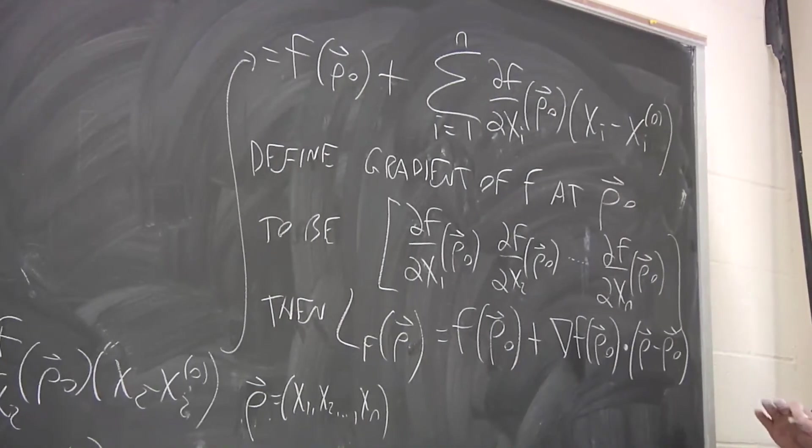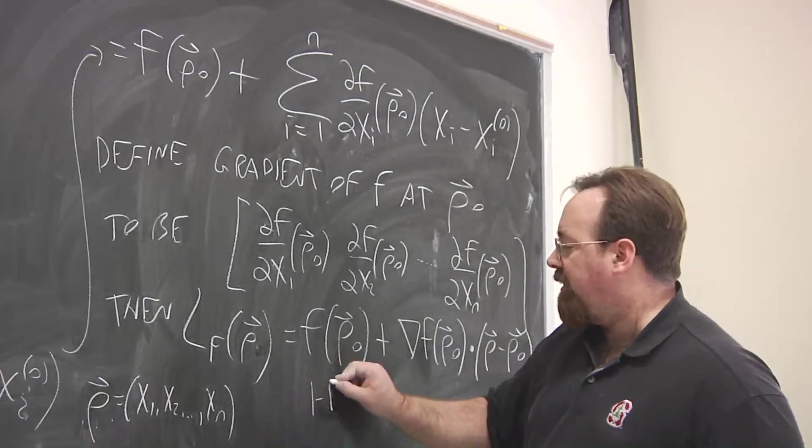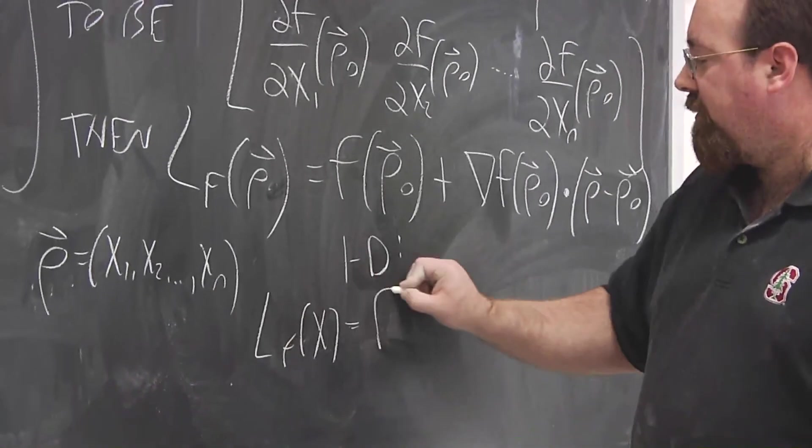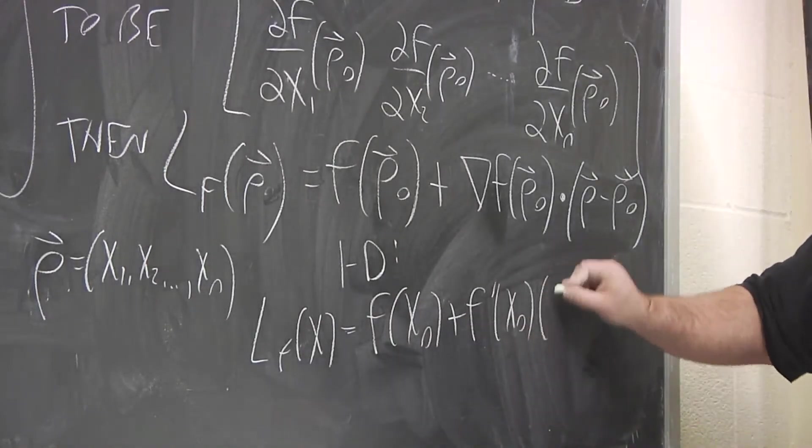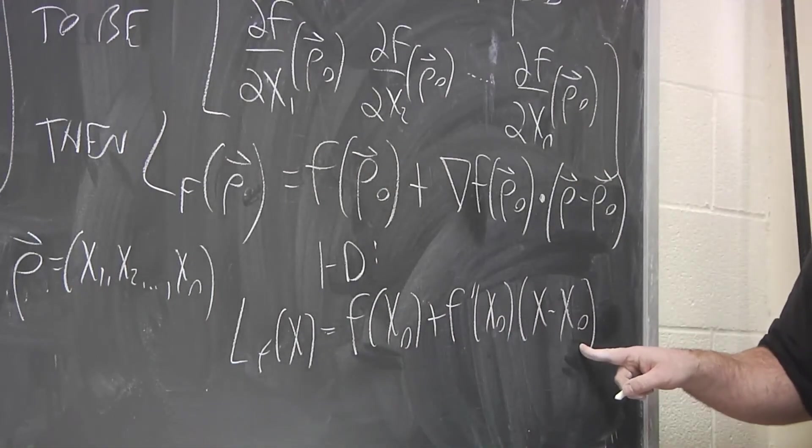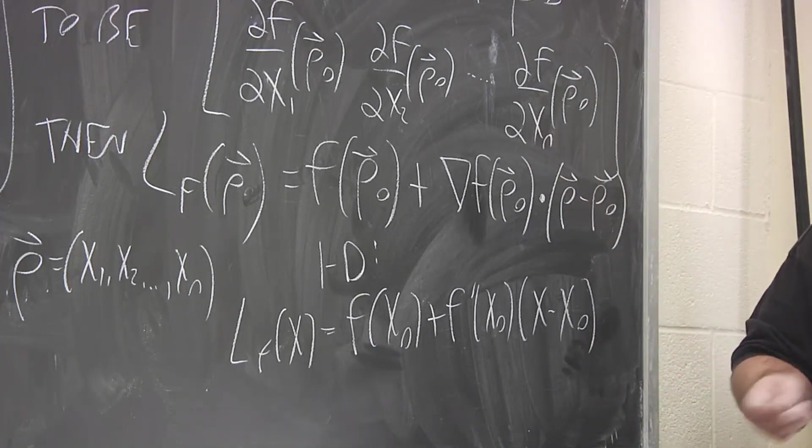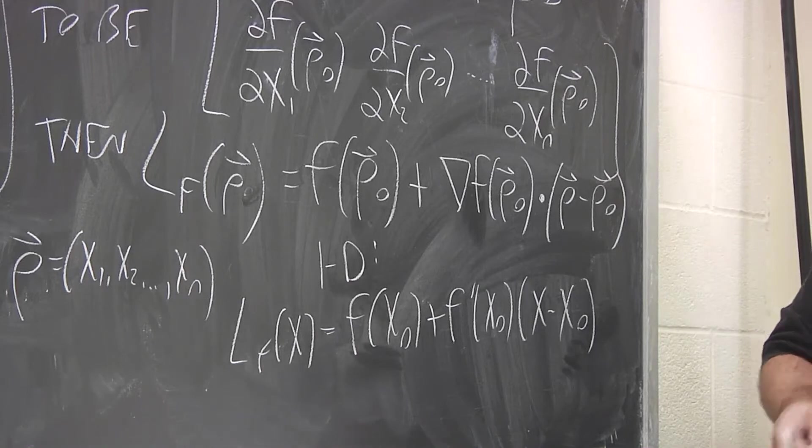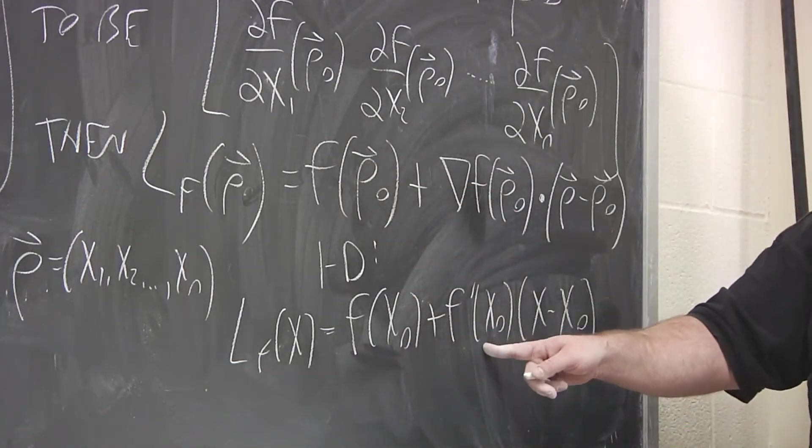Now, I'm writing it this way so that you can compare this with what we know from a one-dimensional case. So in 1D, we have the linearization being the value of the function at that point, plus the derivative times the difference in variables. So it's all the same, except now we're just working with vectors instead of scalars to represent our variables.